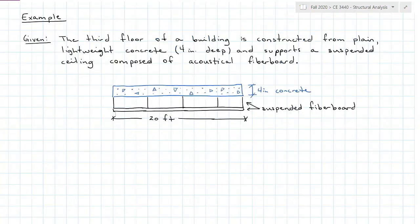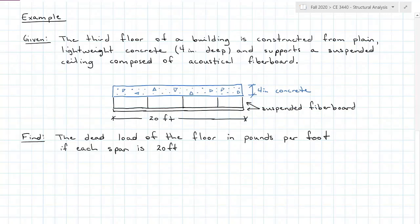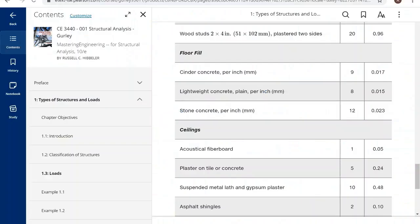Let's say for example we have a portion of a floor from the third floor of a building constructed from concrete that's four inches deep and supports a suspended ceiling with acoustical fiberboard. I've got my crude drawing here. I want to find the dead load of the floor in pounds per foot. The first thing I'm going to do is come over here to my textbook. Table 1-3 has all my dead loads, and I see that I have lightweight concrete at eight pounds per square foot and acoustical fiberboard at one pound per square foot.